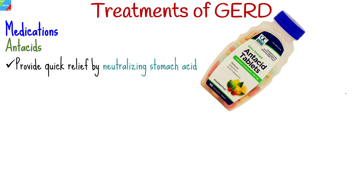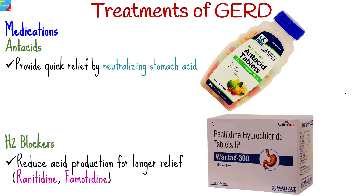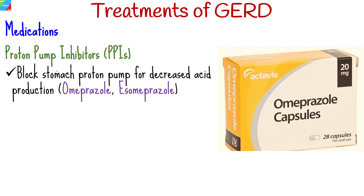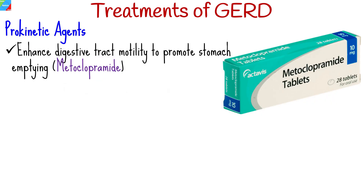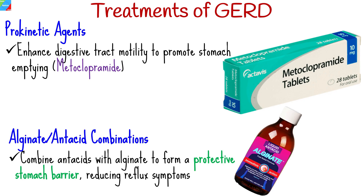Antacids provide quick relief by neutralizing stomach acid but are short-acting. H2 blockers reduce acid production for longer relief, such as ranitidine and famotidine. Proton pump inhibitors block the stomach's proton pump for decreased acid production, such as omeprazole and esomeprazole. Prokinetic agents enhance digestive tract motility and promote stomach emptying, such as metoclopramide. Combined antacids with alginate form a protective stomach barrier, reducing reflux symptoms.